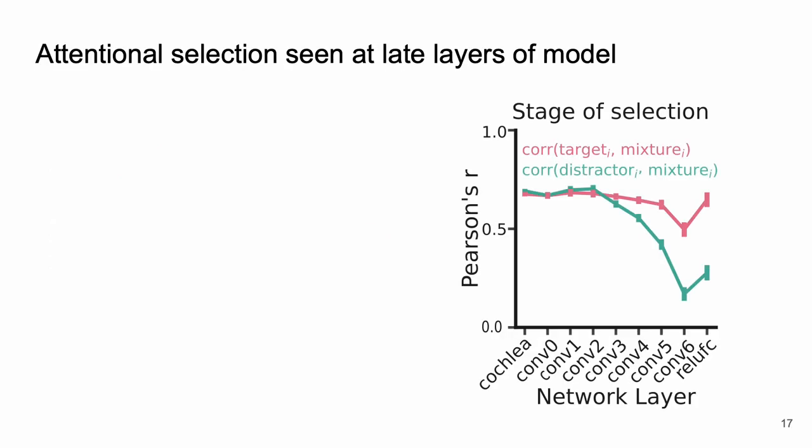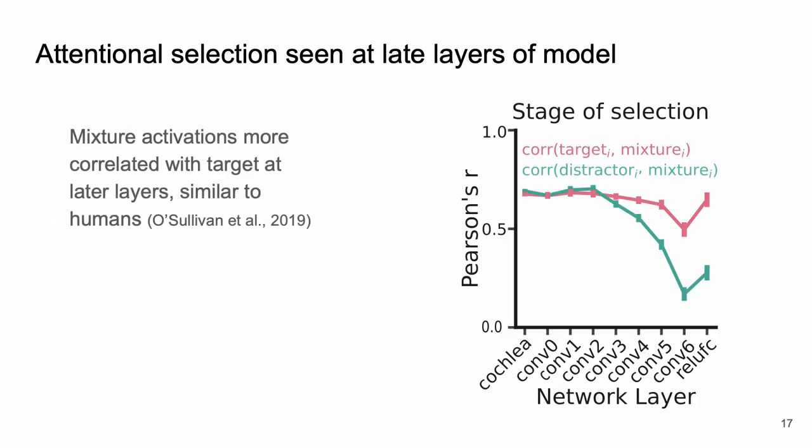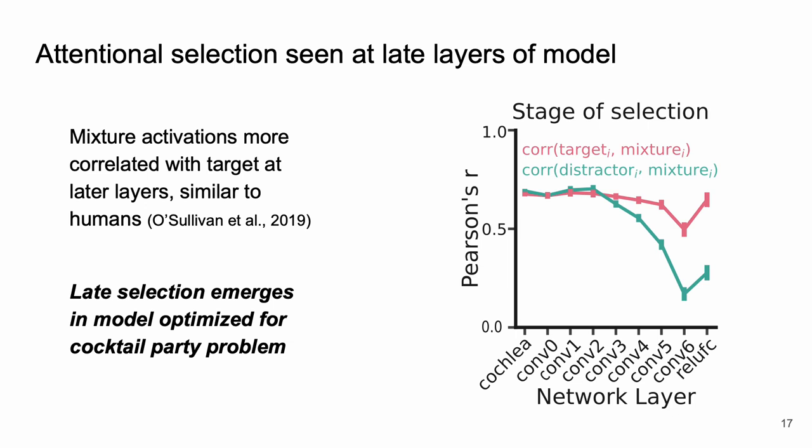What we see in our model is a pattern of late selection. The mixture activations are more correlated with the target only at the later layers, reminiscent of what's seen in humans. We don't constrain how attention is deployed in the model. In this case late selection emerges just as a consequence of task optimization.